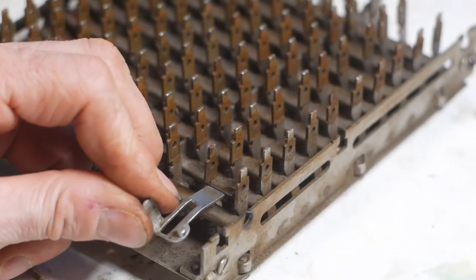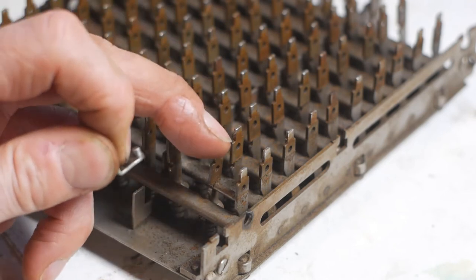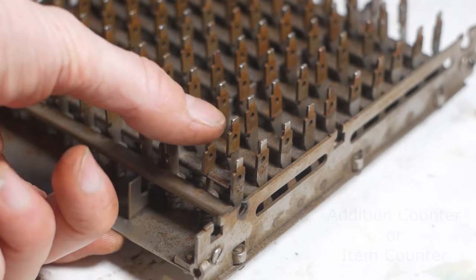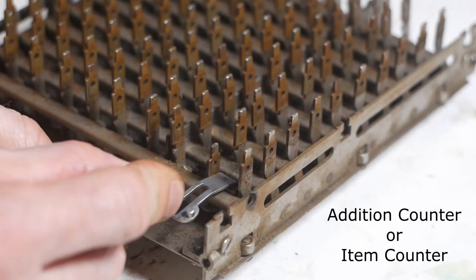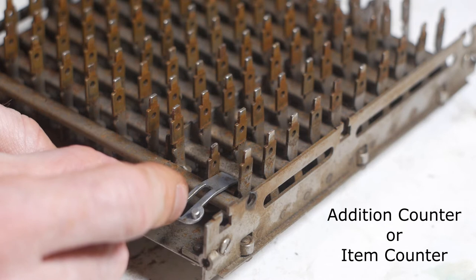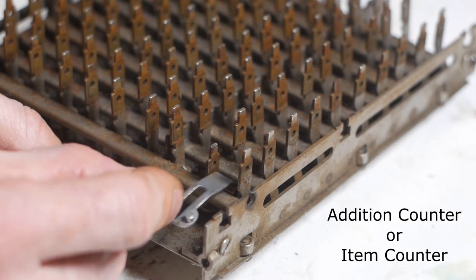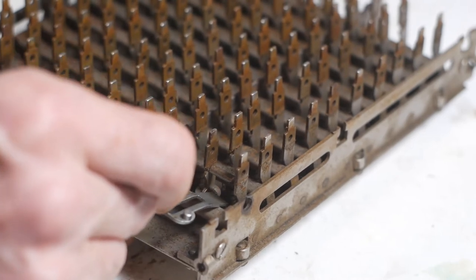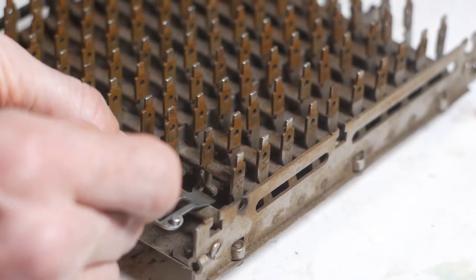So now we're looking at the front left corner of the keyboard where the number one key can be locked down to act as an addition counter. This metal plate is supposed to slide across and lock the key in the down position but the plate is bent and was sitting beneath the number one key and holding the latching bar for that entire column out of position.